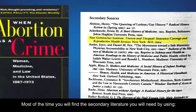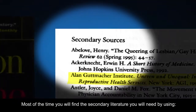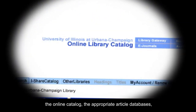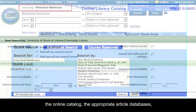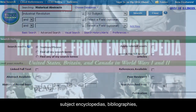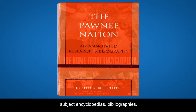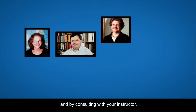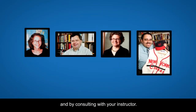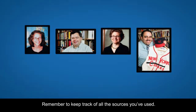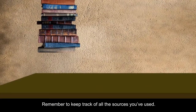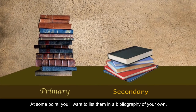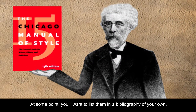Most of the time, you will find the secondary literature you will need by using the online catalog, the appropriate article databases, subject encyclopedias, bibliographies, and by consulting with your instructor. Remember to keep track of all the sources you've used. At some point, you'll want to list them in a bibliography of your own.